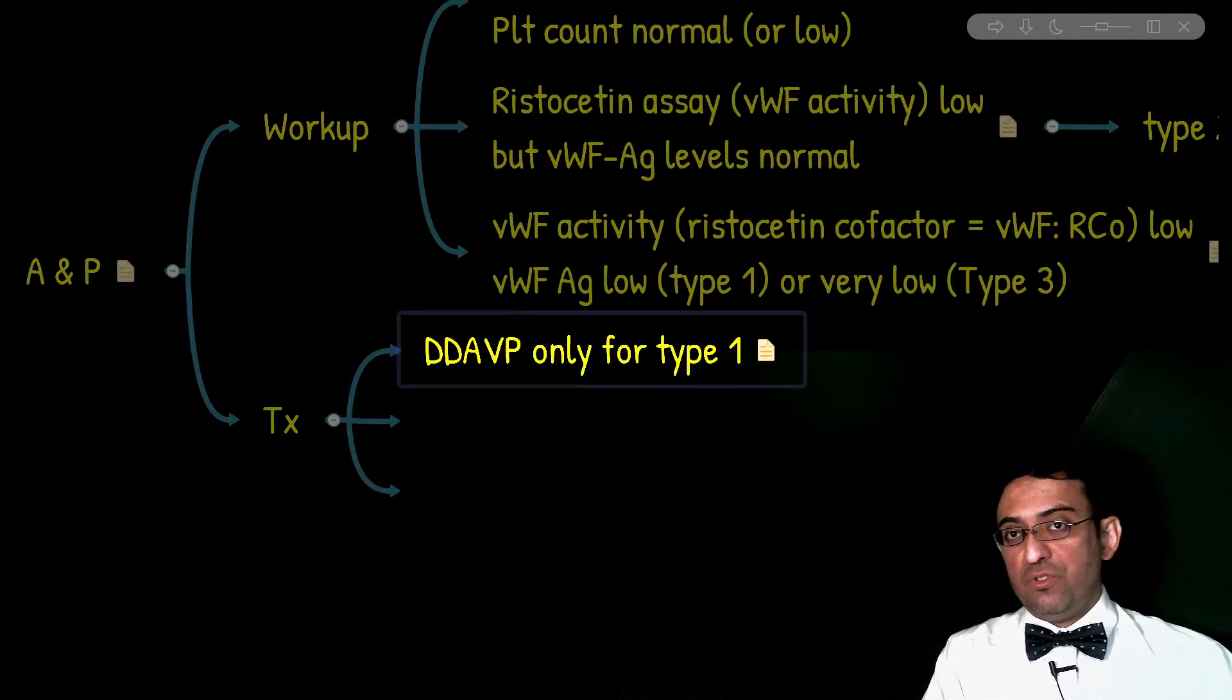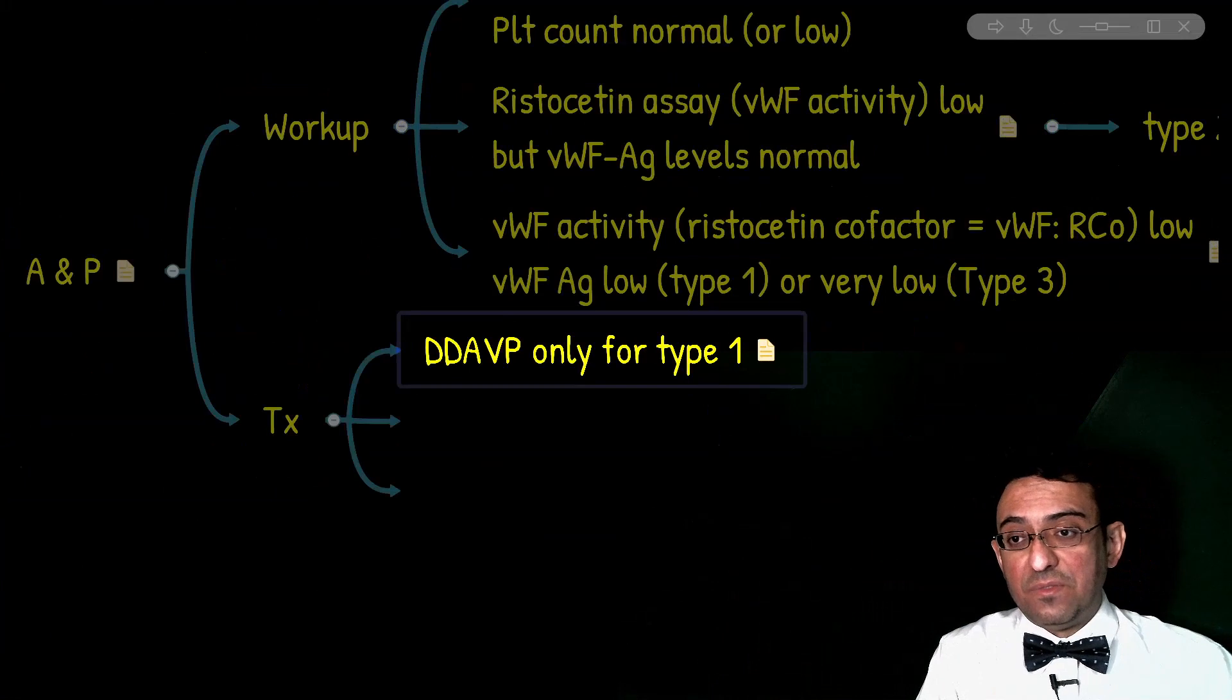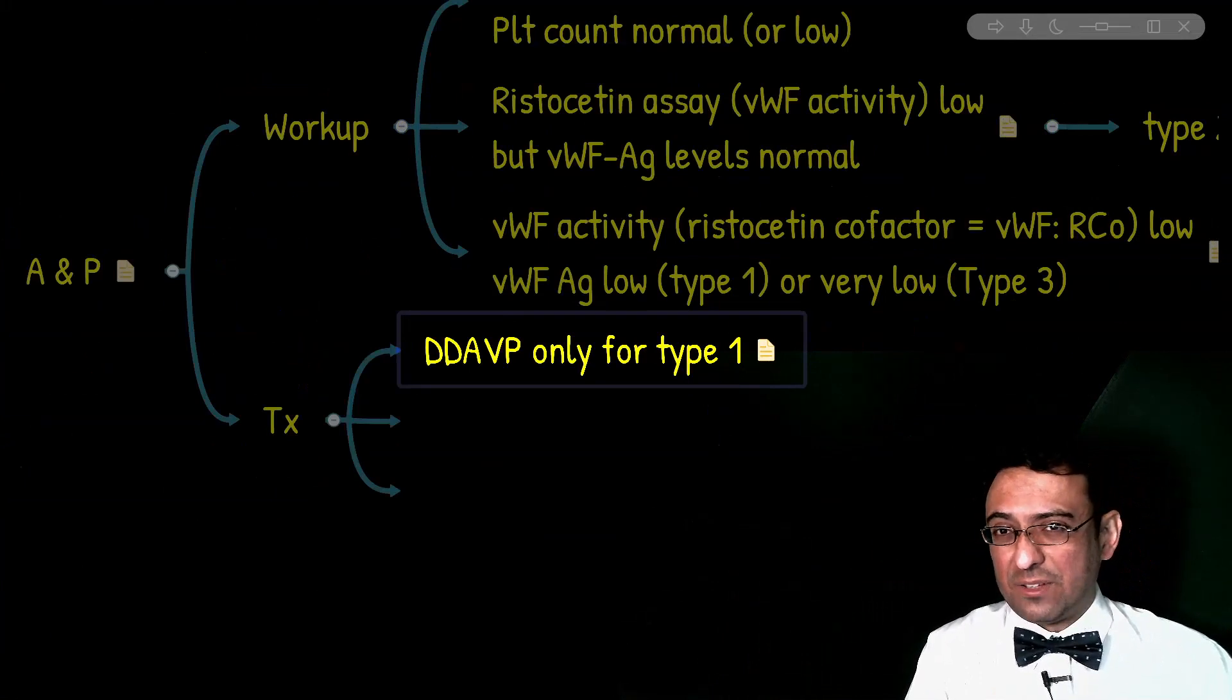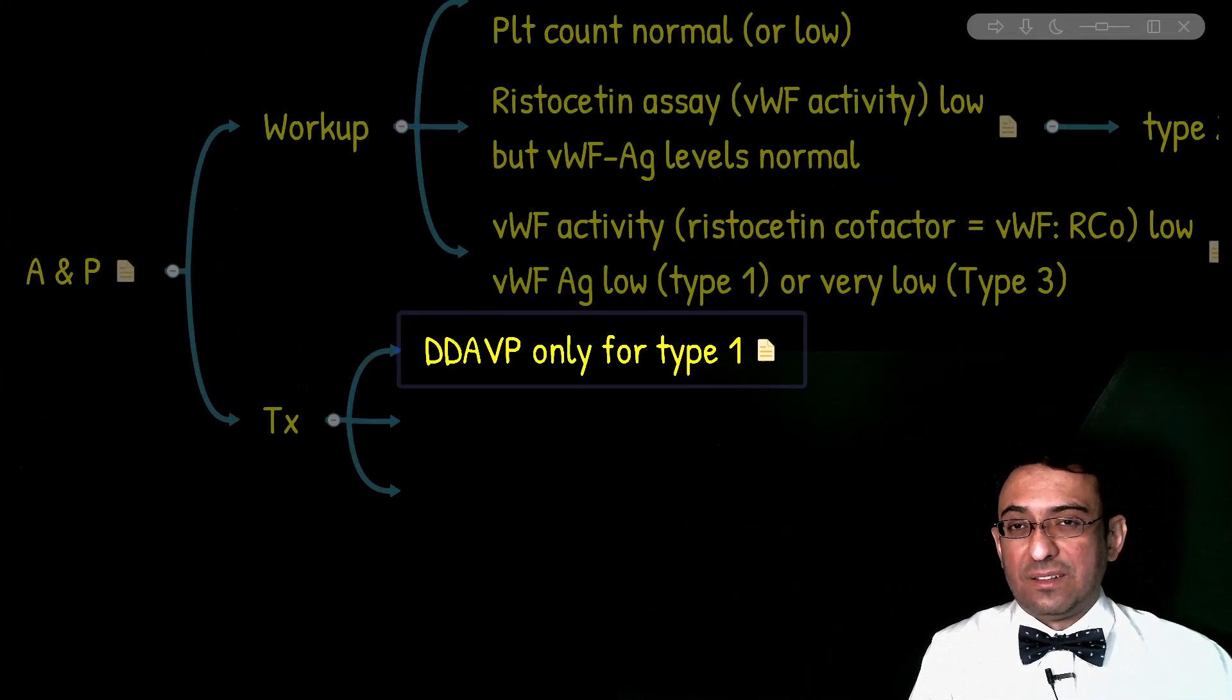In type II, we do not want further release because we have enough quantity. It's a qualitative defect in type II, while the function of desmopressin is just to initiate and facilitate further release of von Willebrand factor from endothelium. In type III, there is almost zero production of von Willebrand factor, so we cannot facilitate it. That's why desmopressin is only used for type I von Willebrand disease, also known as mild to moderate von Willebrand disease.